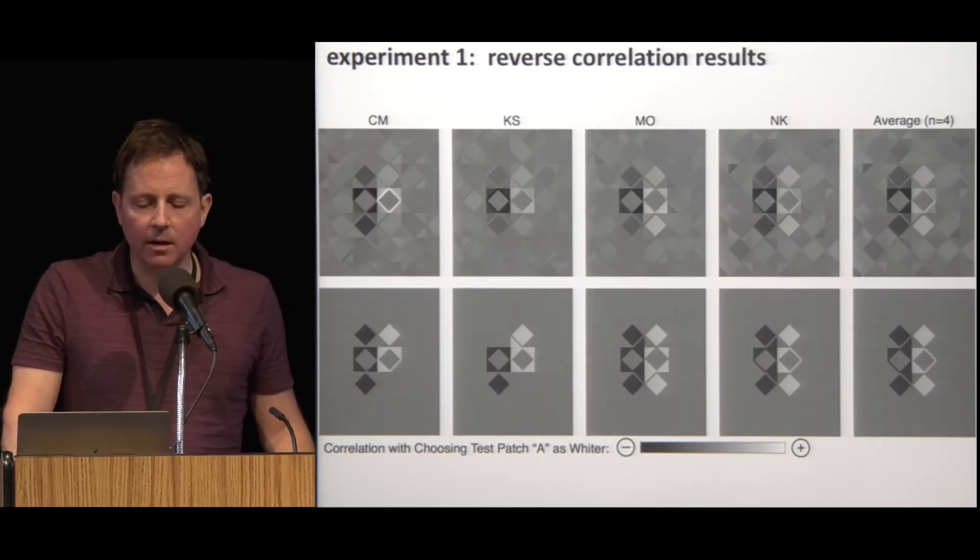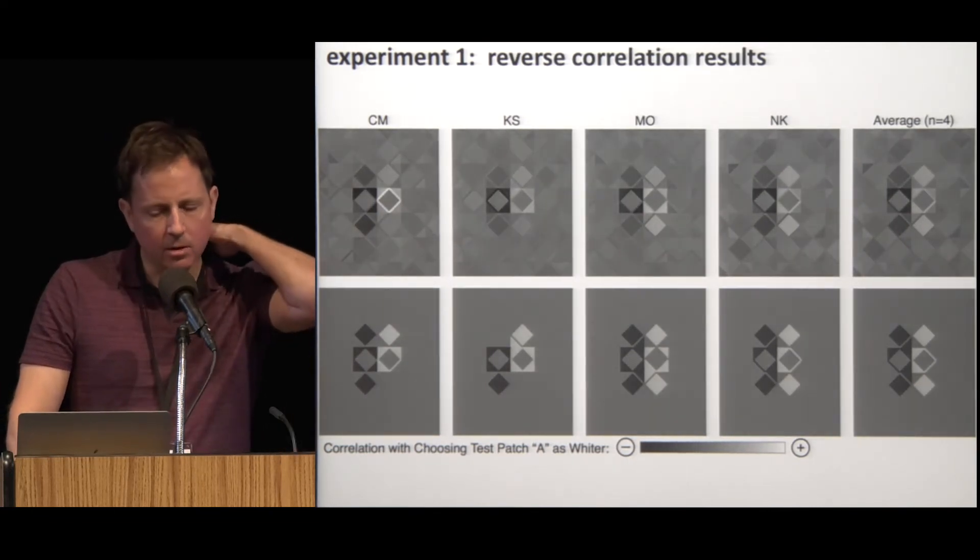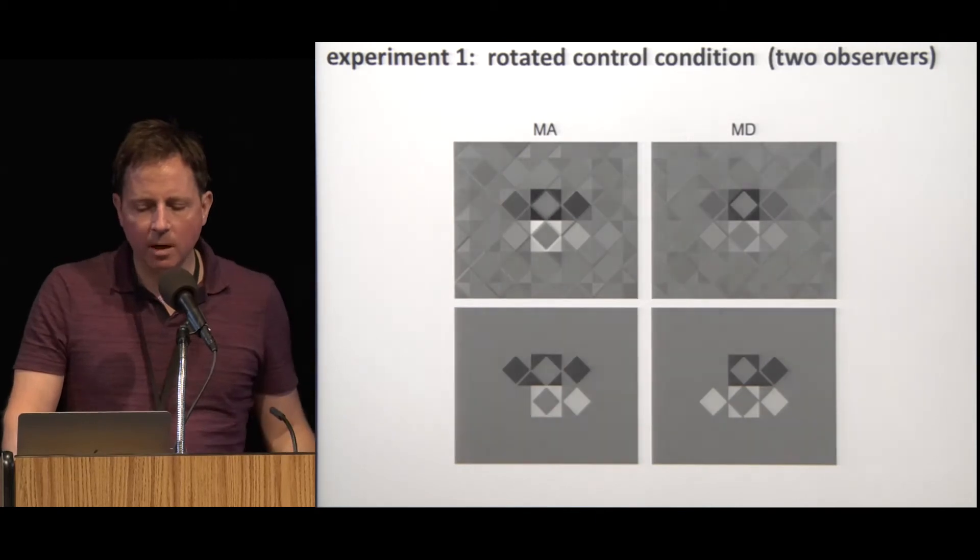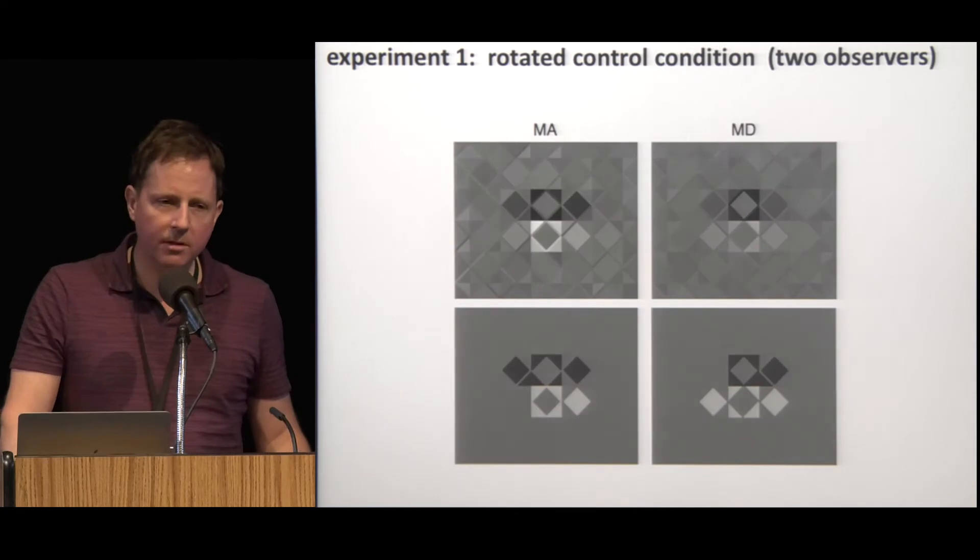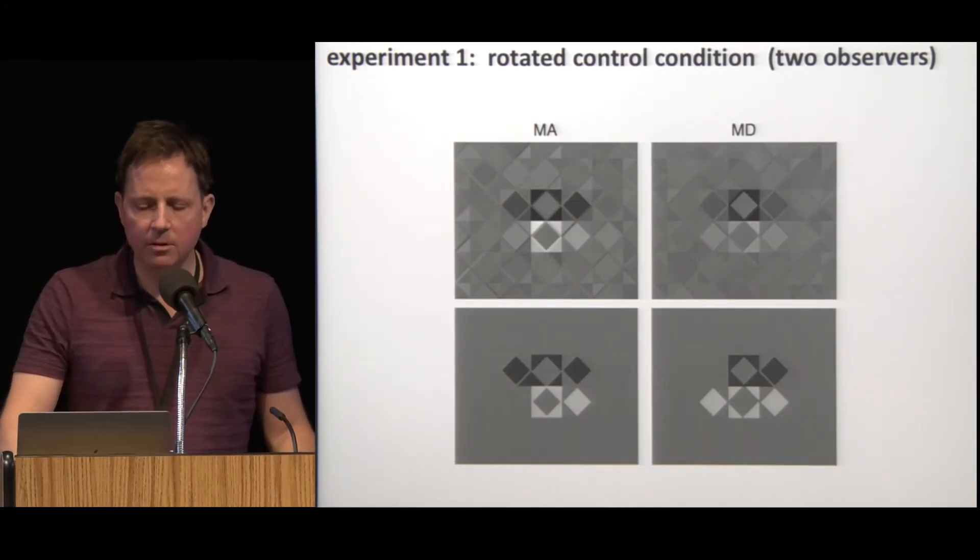Third, and maybe most interestingly, the effects here are anisotropic. The diamonds above and below the test diamonds affect lightness judgments, but the diamonds to the left and the right do not, even though they're the same distance away. Remember that the Argyle illusion is made up of vertical strips that give the impression of light and dark lighting regions. In the lightness literature, regions of uniform lighting are called lighting frameworks. These classification images suggest that the elements in the same vertical lighting framework as the test patches have more of an effect than elements in other frameworks. We ran a control experiment where we rotated all stimuli 90 degrees clockwise, and we ran another 10,000 trials for two observers. Then we found that the diamonds to the left and the right had an effect, but the diamonds above and below did not. So the effect does seem to track lighting frameworks, and we're not just seeing a bias towards the vertical.